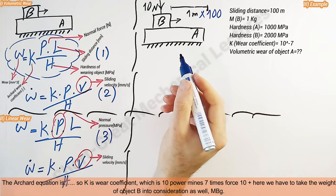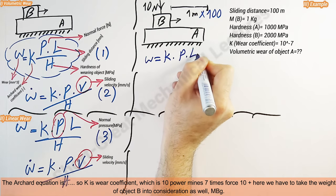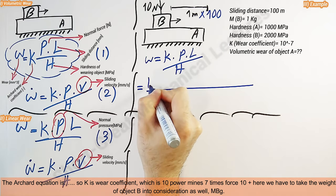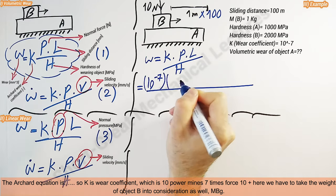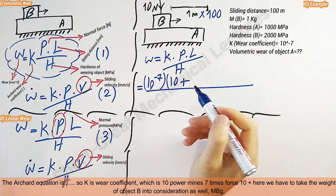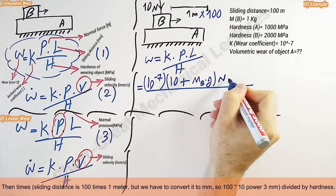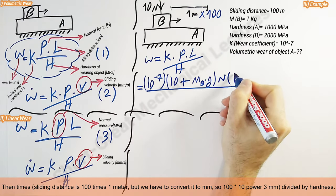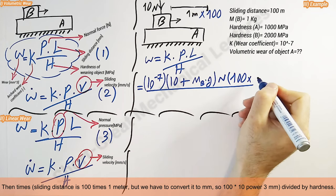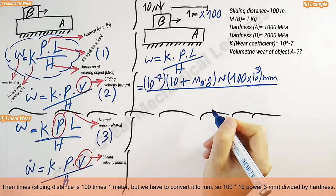The Archard equation is K, P, L divided by H. So K is wear coefficient, which is 10 power minus 7. Here the force is 10 plus, we have to take the weight of object B into consideration as well, M_B times g. Then times sliding distance is 100 times 1 meter, but we have to convert it to millimeter, so 100 times 10 power 3 millimeter, divided by hardness.